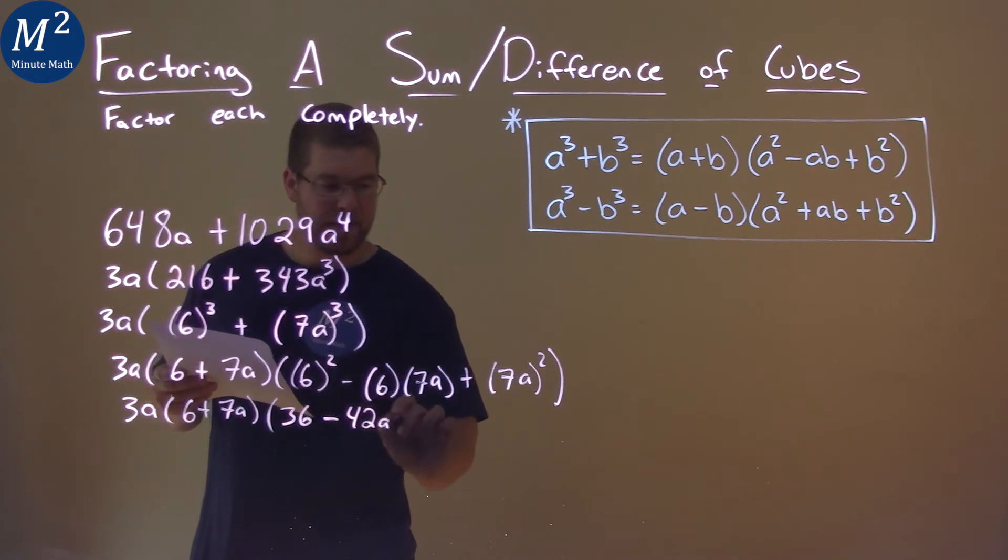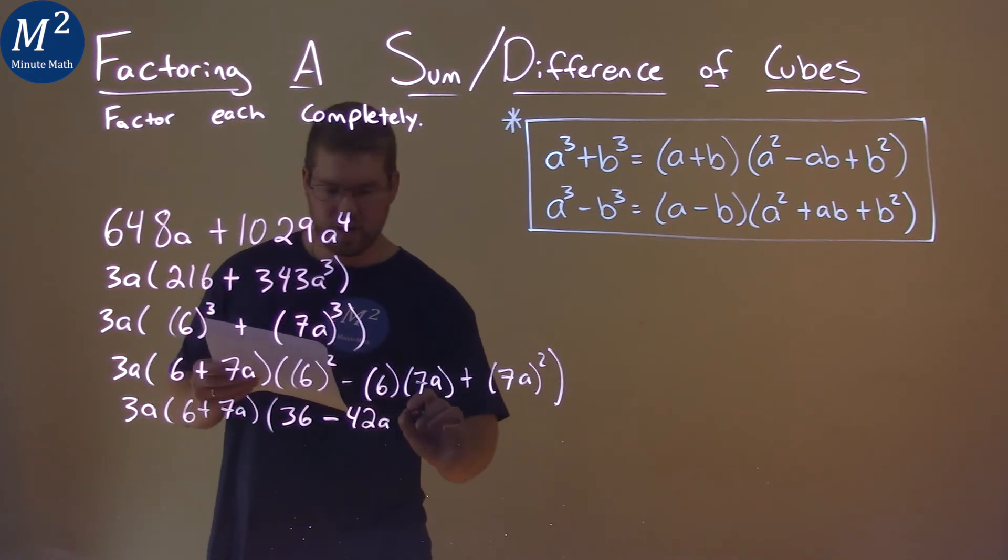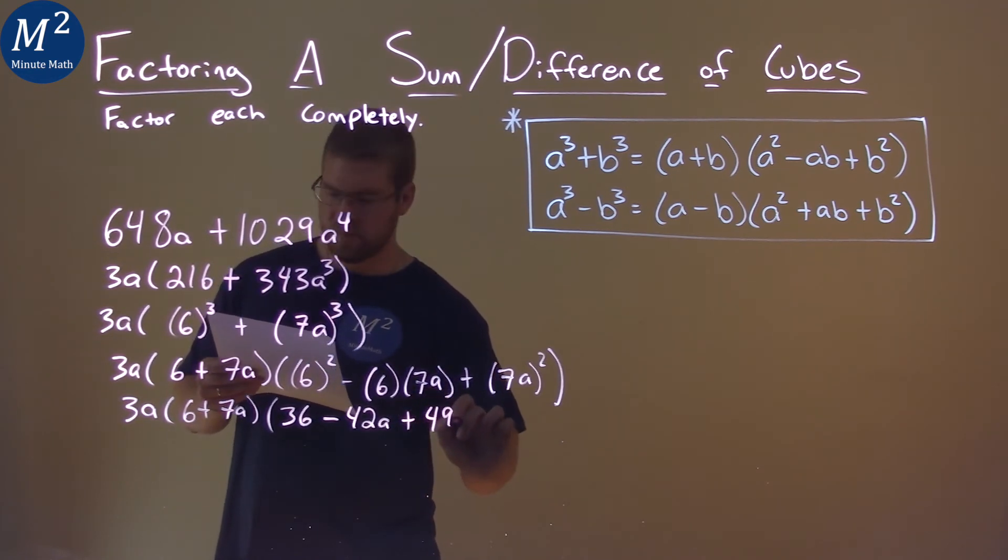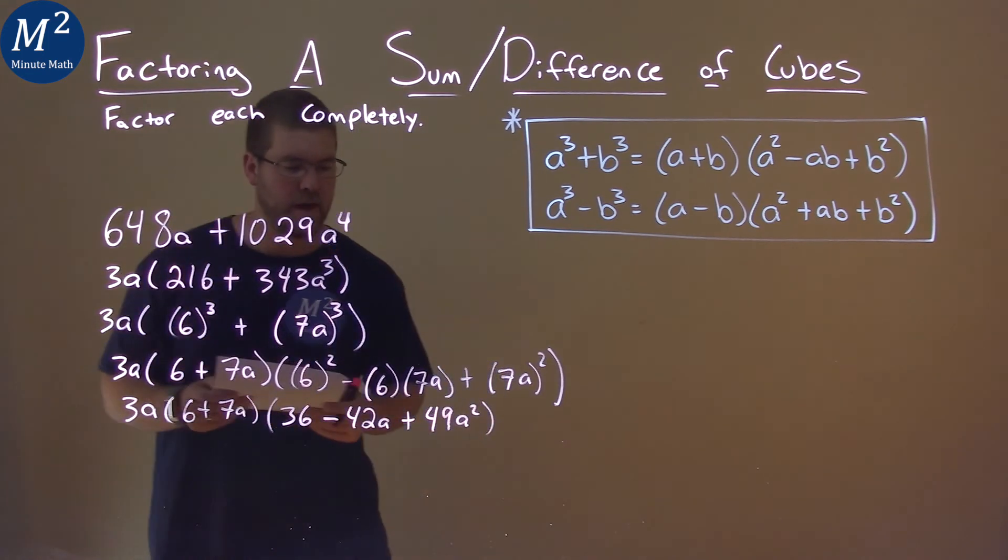Don't forget the a. And then 7a squared, or 7a all squared, is plus 49a squared. Make sure the 9 doesn't look like the a.